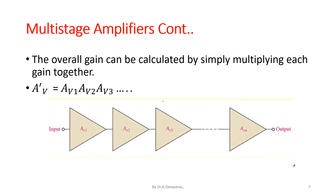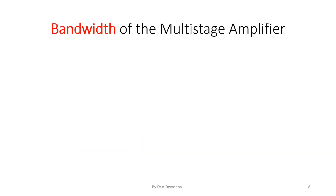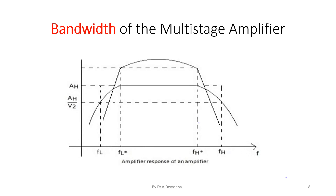Here, the input is applied to the first amplifier and we obtain the output at the nth amplifier. The overall gain is the product of the individual voltage gains, as indicated in this diagram. The bandwidth of the multi-stage amplifier is shown below. The bandwidth of the multi-stage amplifier is lower when compared to the bandwidth of the single-stage amplifier, as represented in this diagram.